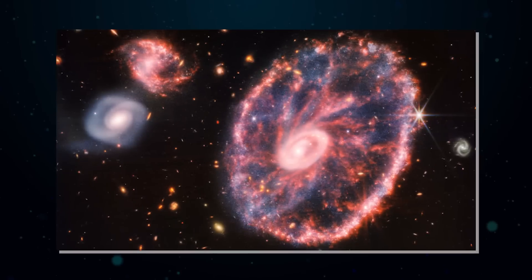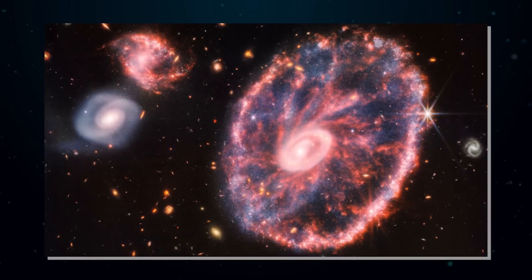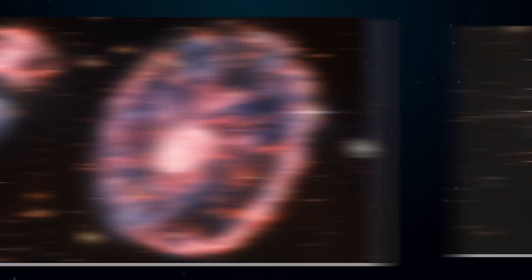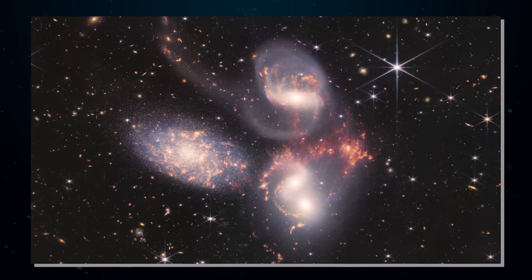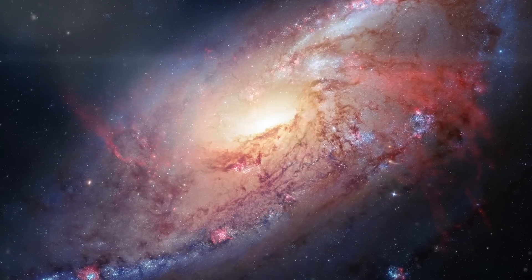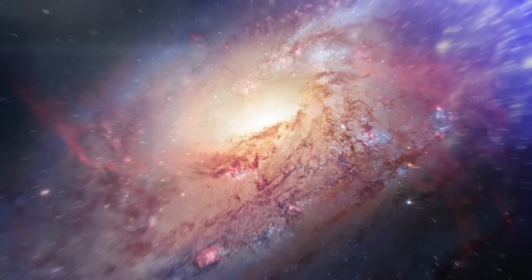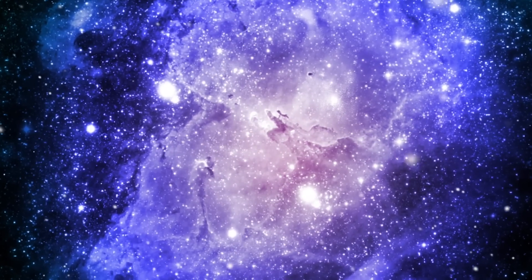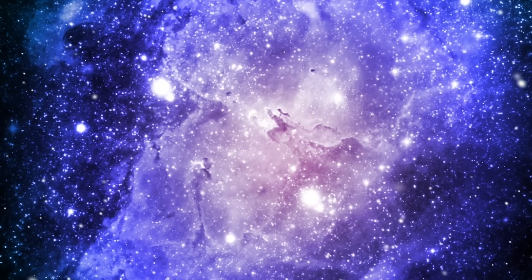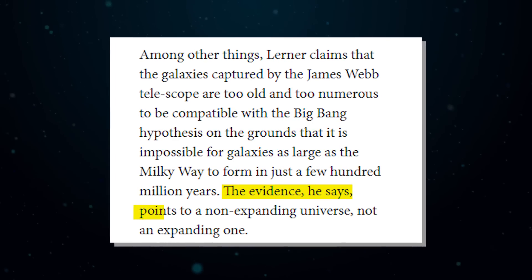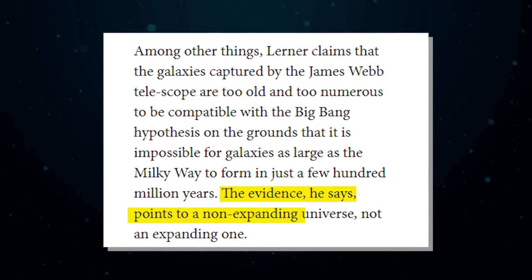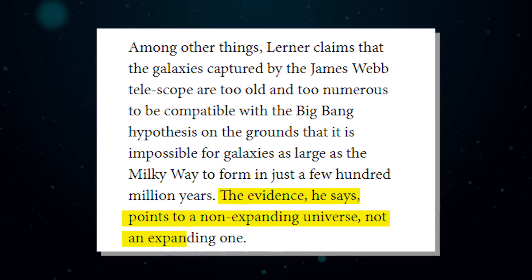Among other things, Lerner claims that the galaxies captured by the James Webb telescope are too old and too numerous to be compatible with the Big Bang hypothesis, on the grounds that it is impossible for galaxies as large as the Milky Way to form in just a few hundred million years. The evidence, he says, points to a non-expanding universe, not an expanding one.